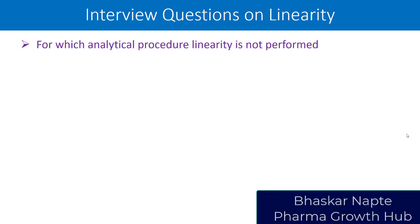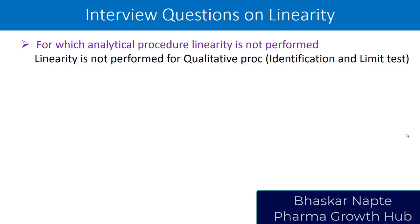The first question: for which analytical procedure is linearity not performed? According to ICH, USP, or NVSA — what do regulators say about linearity for different test procedures? The answer is: linearity is not performed for qualitative analytical test procedures, and very specifically, for identification tests and limit tests, linearity is not performed.